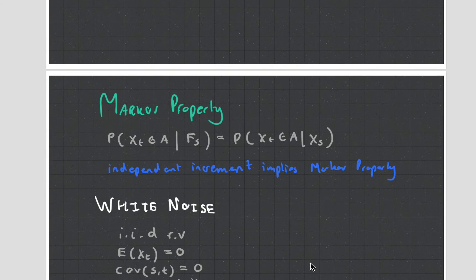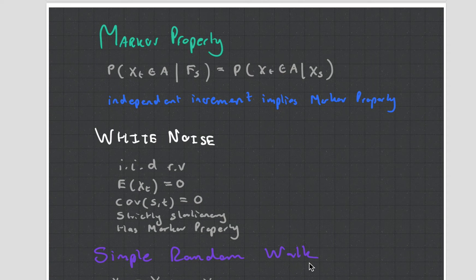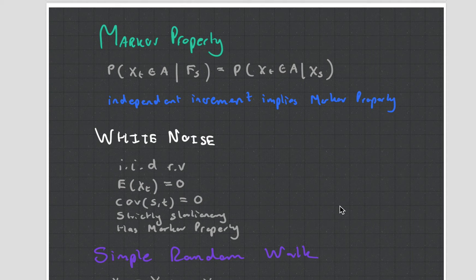Then you get something known as the Markov property. What the Markov property says is that in order to predict the future, you only need the current value, because the current value contains all information on the past. It's a beautiful philosophical thing to think about. If the increments are independent, it means the process has the Markov property — and I'll let you think about why that works, because thinking is good in this course.